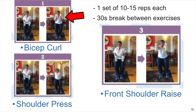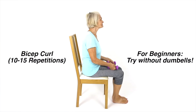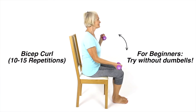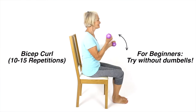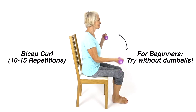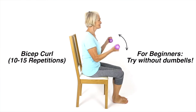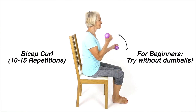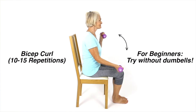Number one was a bicep curl. Sit down and hold on to a dumbbell. Bend your elbow while holding the dumbbell, and at the top of the movement, slowly lower the dumbbell in a controlled way. Keep your elbow tucked in to your side. This is a strengthening exercise for your elbow and upper arm biceps muscle.